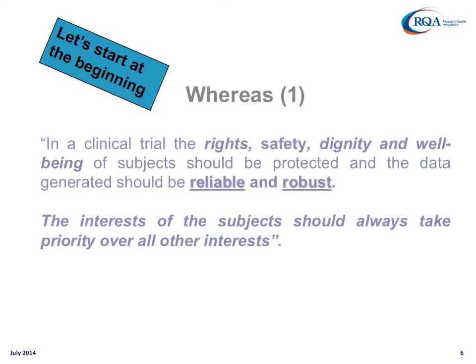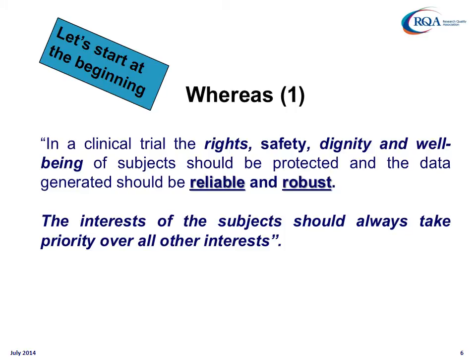Let's start at the very beginning of the new regulation. The very first clause, Whereas One, sets the scene for the whole of clinical research and GCP standards. It says that in a clinical trial, the rights, safety, dignity, and well-being of subjects should be protected. It also says that data generated should be reliable and robust. And they've added another GCP principle: the interests of the subject should always take priority over all other interests — going further than ICH E6, which says interests of the subject should take priority over the interests of science.